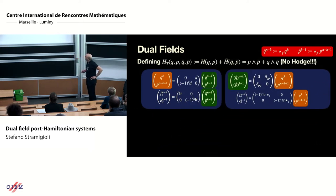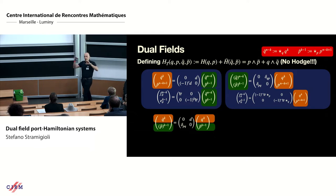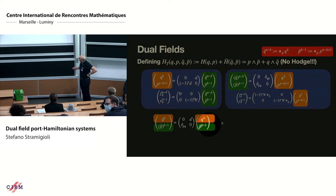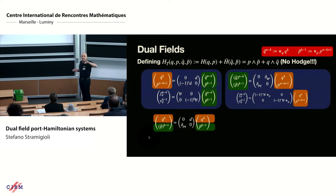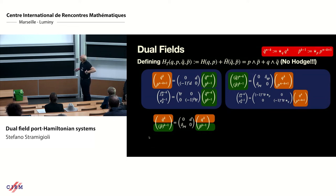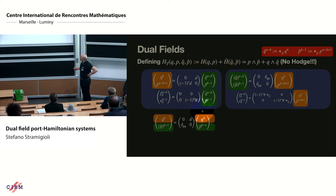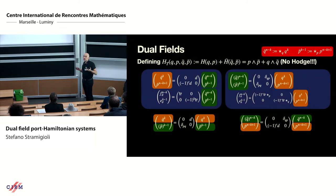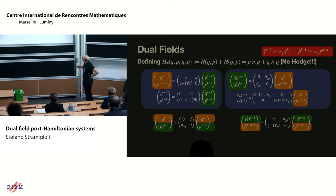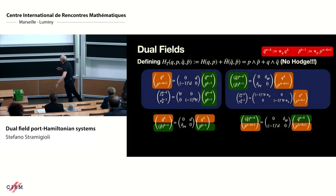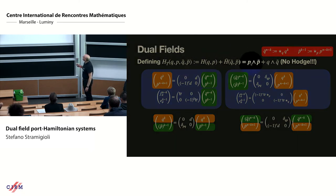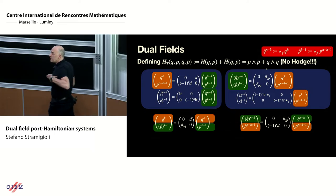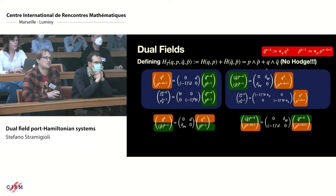Placing the two systems side by side, you observe that crossing equations gives an operator combining D and the co-differential (defined as ★D★). One system has q and p̄, the other q̄ and p. Interestingly, if you define the total energy as the sum of energy and co-energy — a function of q, p, q̄, p̄ — the Hodge star disappears from the energy expression. You can express total energy without any metric information.